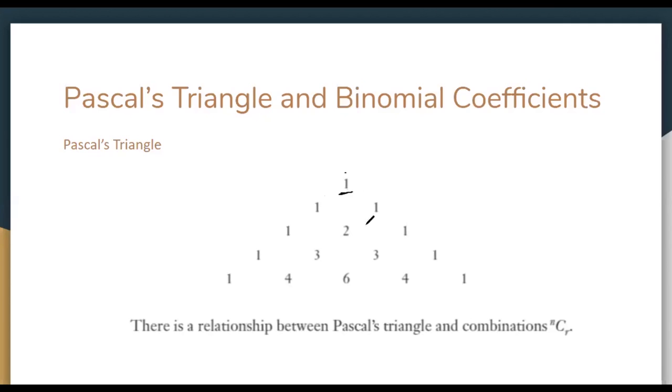Here in row one I've got one column, but in row two I've got two columns, and in row three I've got three columns, and so on. That's how we go down in Pascal's triangle.